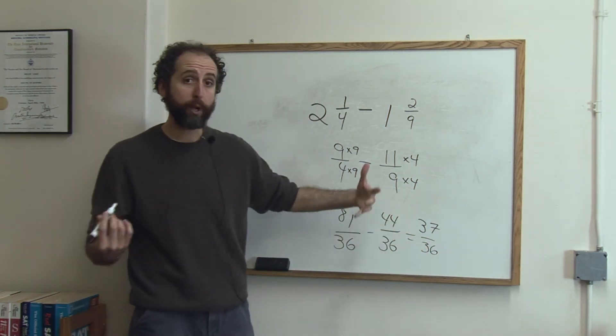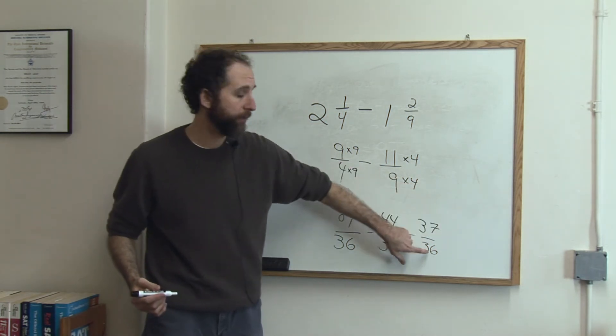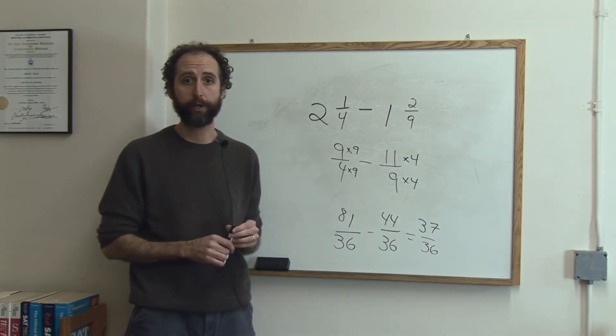Now that is an improper fraction. It means the top is bigger than the bottom, it means it's more than one, represented as a fraction.